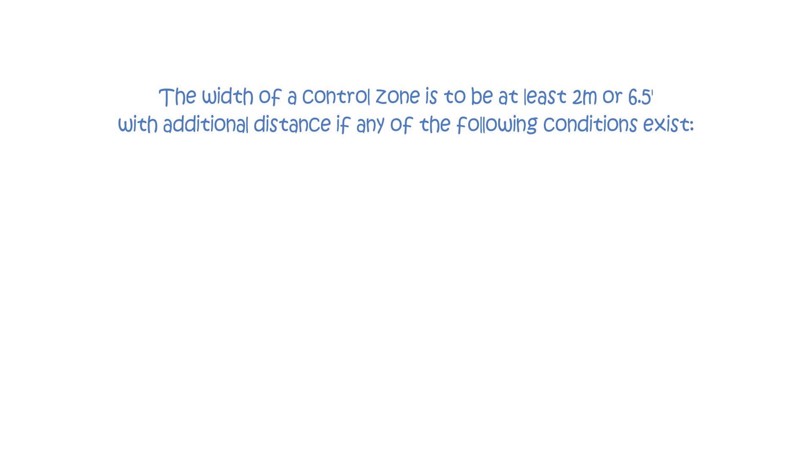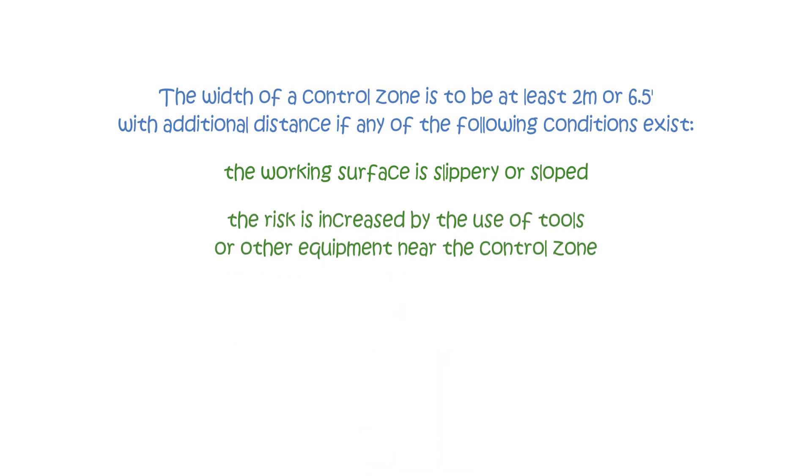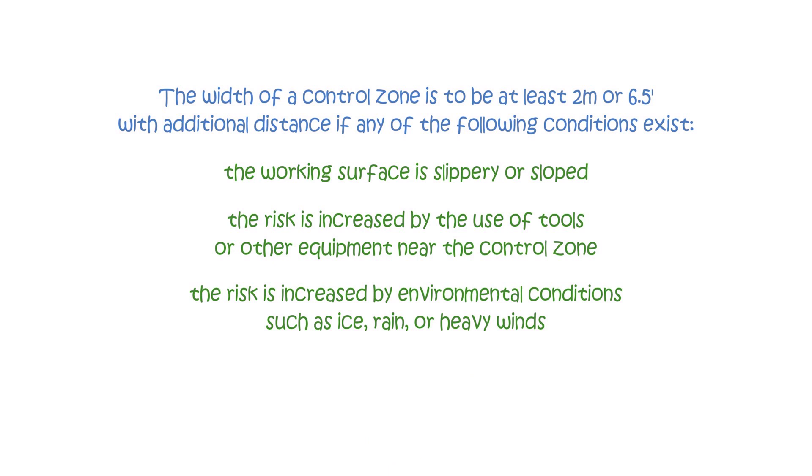The width of a control zone is to be at least two meters or six and a half feet, with additional distance if any of the following conditions exist: the working surface is slippery or sloped; the risk is increased by the use of tools or other equipment near the control zone; the risk is increased by environmental conditions such as ice, rain or heavy winds; or the work is carried out at an elevation relative to the unguarded edge, for example, working on an air handling unit from a ladder.